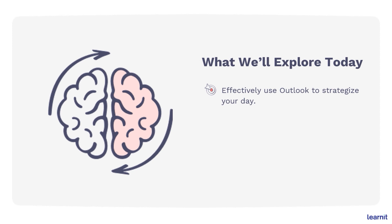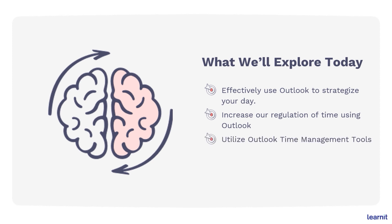This course has three segments. The first segment: we'll talk about how to effectively use Outlook to strategize our day — Outlook is going to be the tool we're using. The second segment: we'll talk about how to increase our regulation of time using Outlook. Remember, we cannot control time — time is fixed. We can only regulate our tasks. The third segment: we'll talk about how to utilize Outlook time management tools, including bonus tools to automate processes or create a two-click solution.